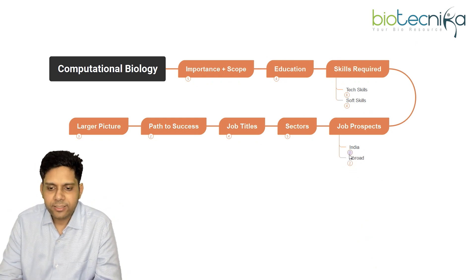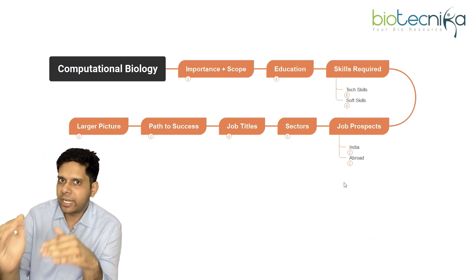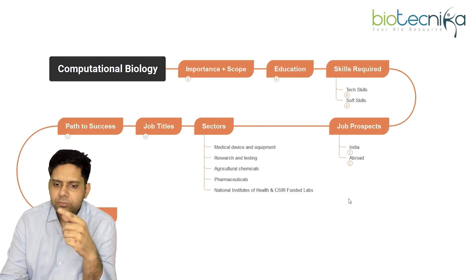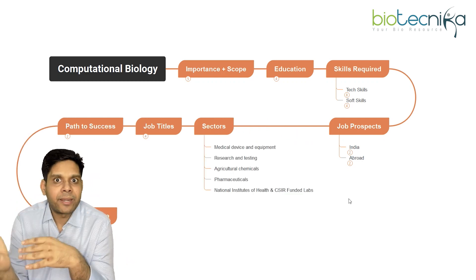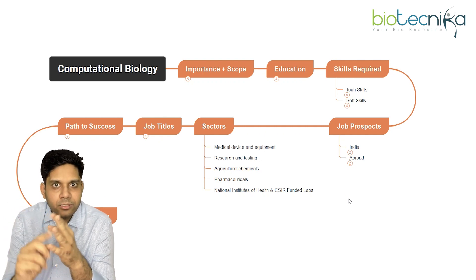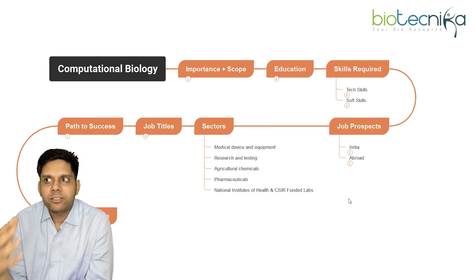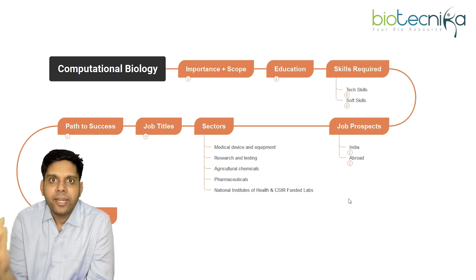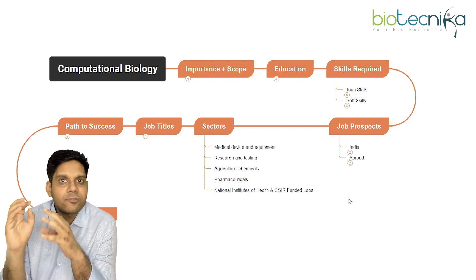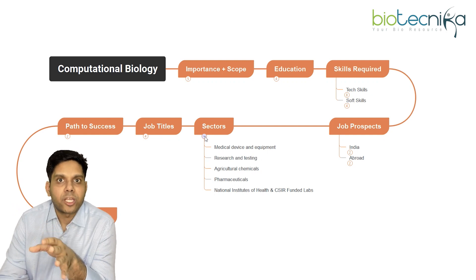Now let's look at the sectors you can get into. You can work in medical devices, biomedical devices, research and testing, agricultural chemicals, pharmaceuticals and big pharma, and various funded labs of CSIR and the National Institute of Health in the US — these are the places where you can get in easily with a computational biology background.